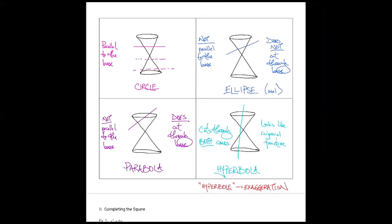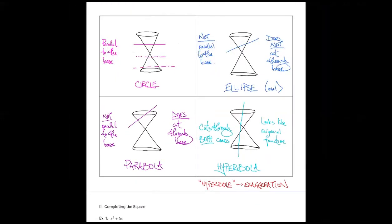So when we think about what we're learning over the next two classes, we're really looking at slices of cones — or conic sections. Today we're going to focus on the circle and the ellipse. Those are the two I want us to know how to graph and describe by the end of this class.